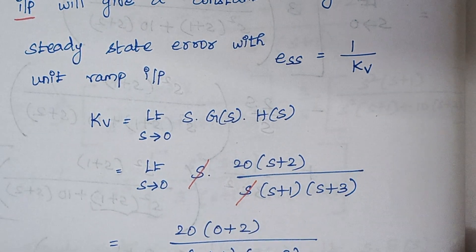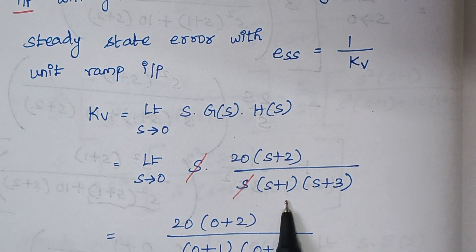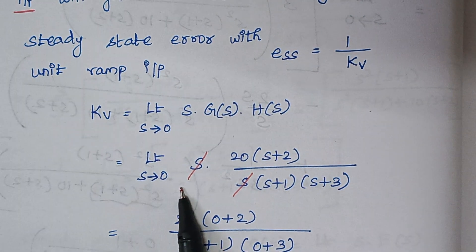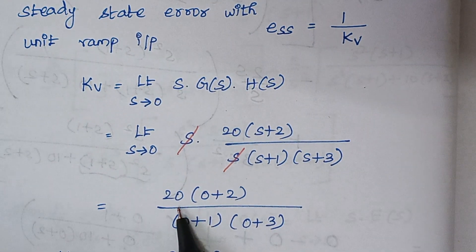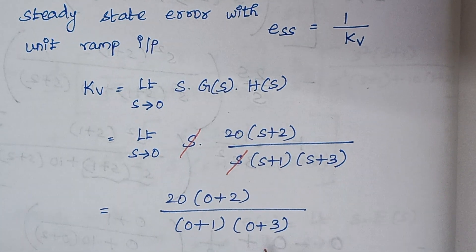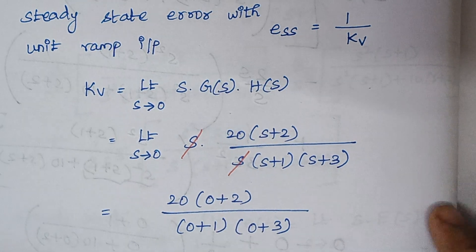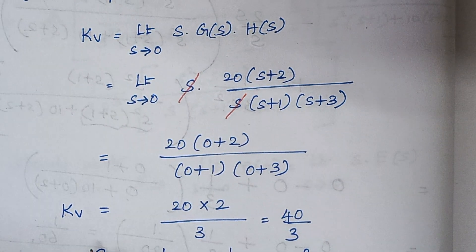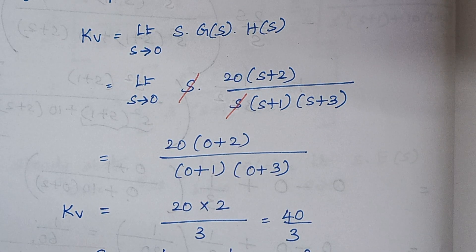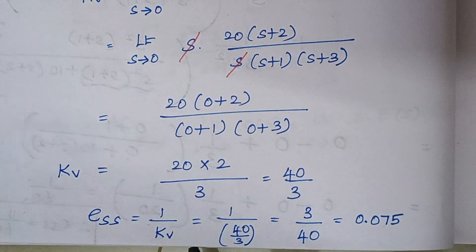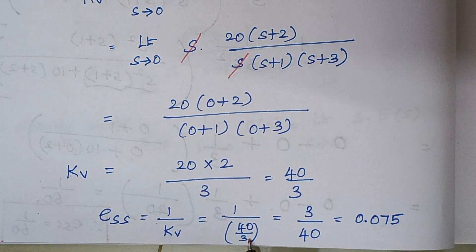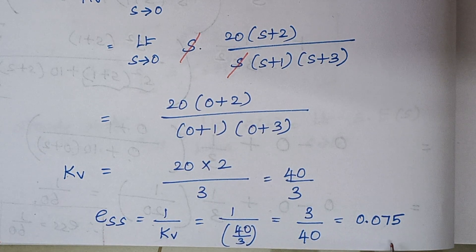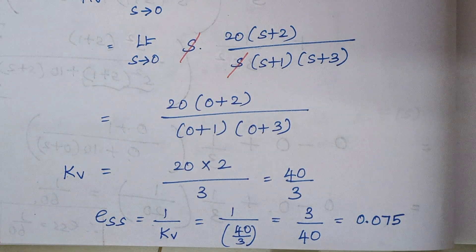The s terms cancel each other. Substituting s equals 0: 20 times (0+2) divided by (0+1)(0+3) gives 20×2 divided by 1×3, which is 40/3. So kv equals 40/3. The steady state error is 1/kv, so ESS equals 1 divided by (40/3), which gives 3/40, and finally the steady state error is 0.075. This is the end of the first part.